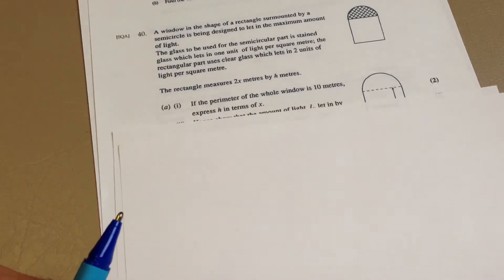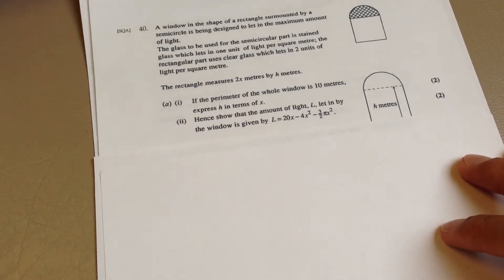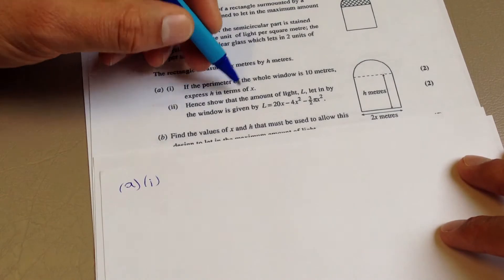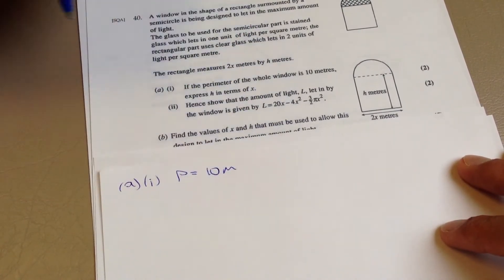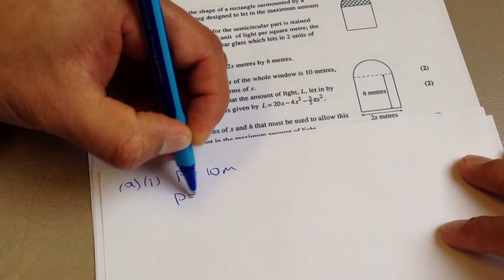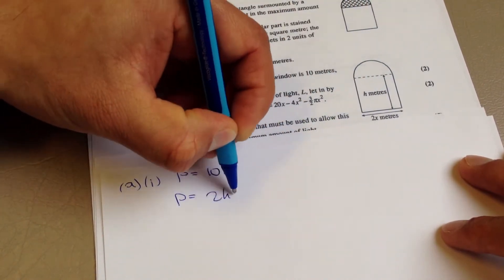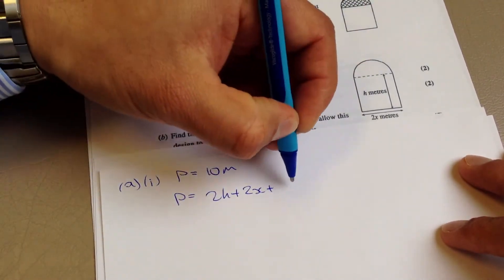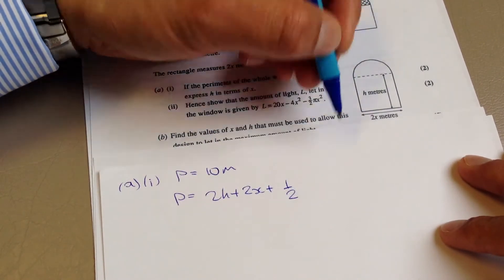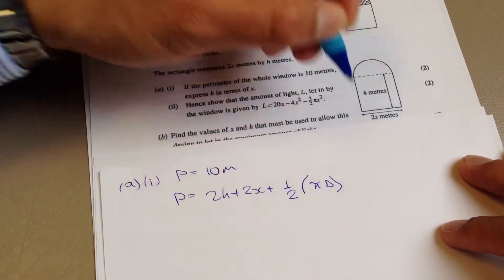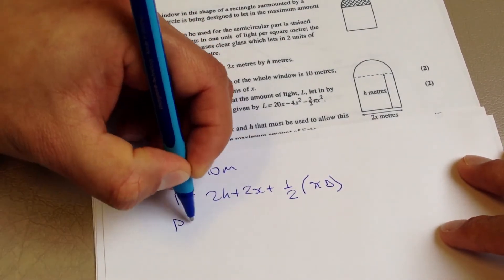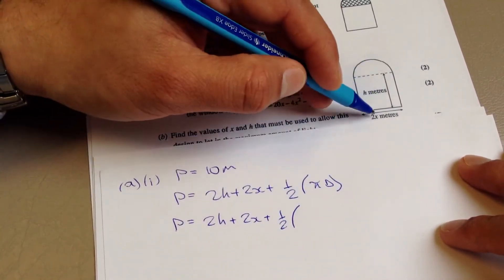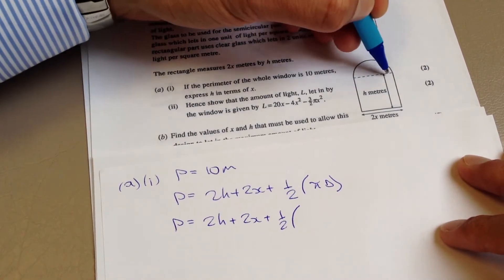So I'll take this, pop it over here, and let's do this. I'll bring this down here so we can actually look at it. This is part one. So the perimeter, we've been told, is 10 metres. And we also know that the perimeter will be 2h, plus 2x, plus, well, what is effectively the arc of the semi-circle, which is half of the circumference of the semi-circle, which is just pi d. What's the diameter? Well, the diameter is 2x, because that's effectively the diameter.